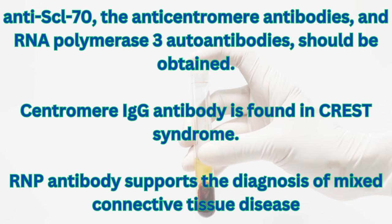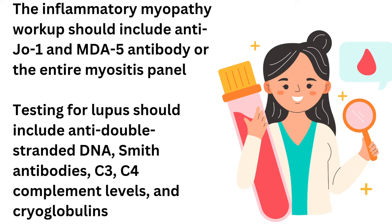Centromere IgG antibody is found in CREST syndrome. RNP antibody supports the diagnosis of mixed connective tissue disease. Inflammatory myopathy workup should include anti-Jo-1 and MDA-5 antibody or the entire myositis panel. Testing for lupus should include anti-double stranded DNA, Smith antibodies, C3, C4 complement levels, and cryoglobulins.